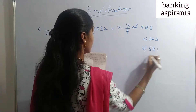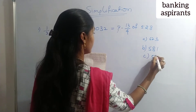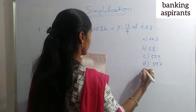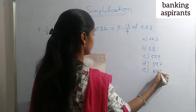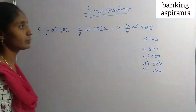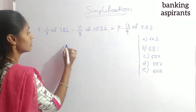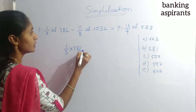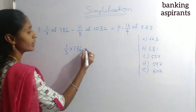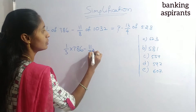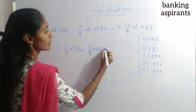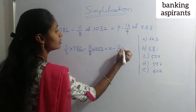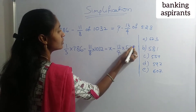Options continued: C) 559, D) 597, E) 607. Solution: 1/3 × 786 minus 11/8 × 1032 equals x minus 13/4 × 528. Multiply through: 1/3 of 786 is 262, 11/8 of 1032 is 1419, and 13/4 of 528 is 1716. So 262 minus 1419 equals x minus 1716.